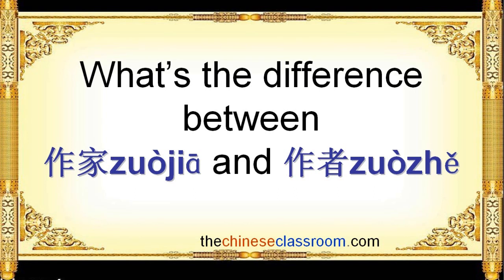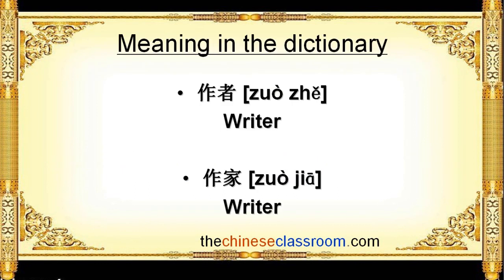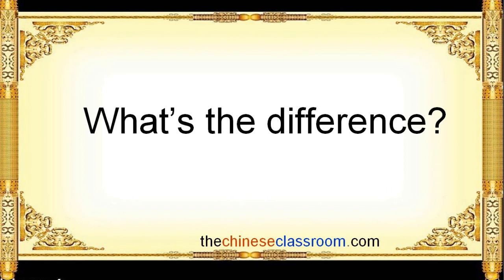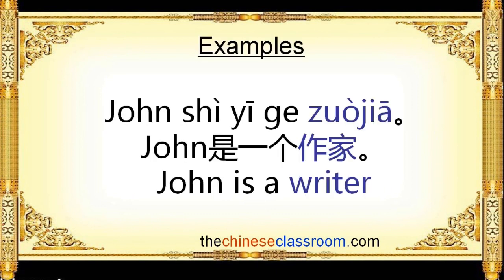What's the difference between 作家 and 作者? If you check the dictionary, 作者 means writer, and 作家 means writer too. So what's the difference? Here are some examples.